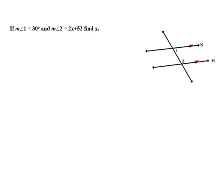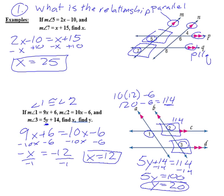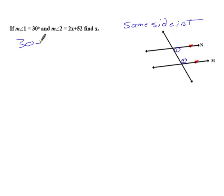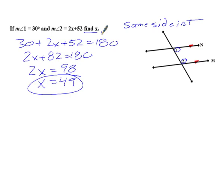Example 3: Lines n and m are parallel (indicated by arrows). Angles 1 and 2 are same side interiors, so add them and set equal to 180. Angle 1 is 30-something and angle 2 is given with x. Simplifying, subtract 82 from both sides to get 98, then divide by 2 to get x = 49.